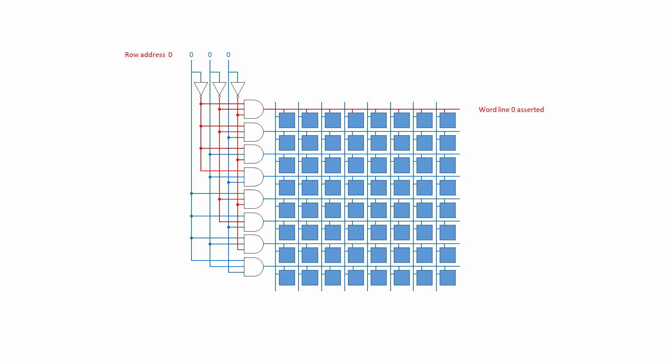If the three address lines are all at zero voltage, then only the top row of the array has a high voltage across it. In other words, only the top word line — let's call it word line zero — is asserted. Notice how each of the decoder's inputs is split into two, then one of each pair is passed through a NOT gate, so the output voltage of each NOT gate is high. Only the top AND gate is connected to the three lines which are high, so only the top AND gate has an output which is high.